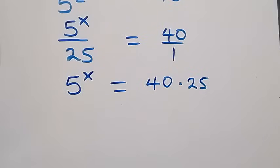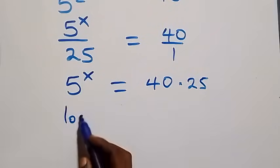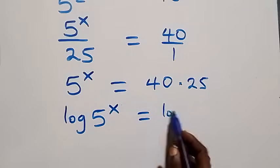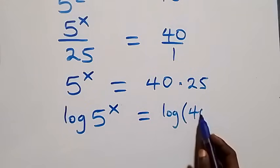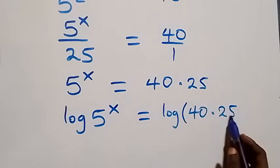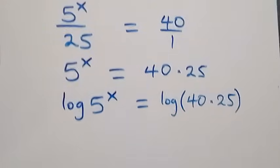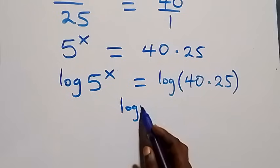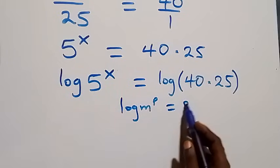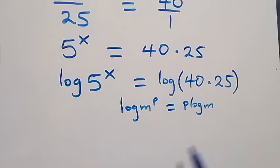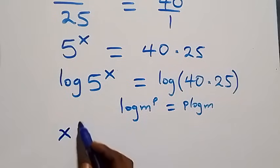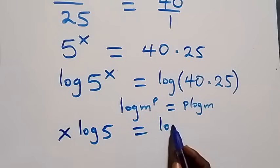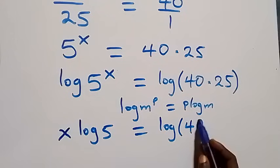The next step, we take the log on both sides. We have log of 5 raised to power x equals log of 40 times 25. We apply the power rule of logarithms — log of m raised to the power p is the same as p log m — so this becomes x log 5 equals log of 40 times 25.